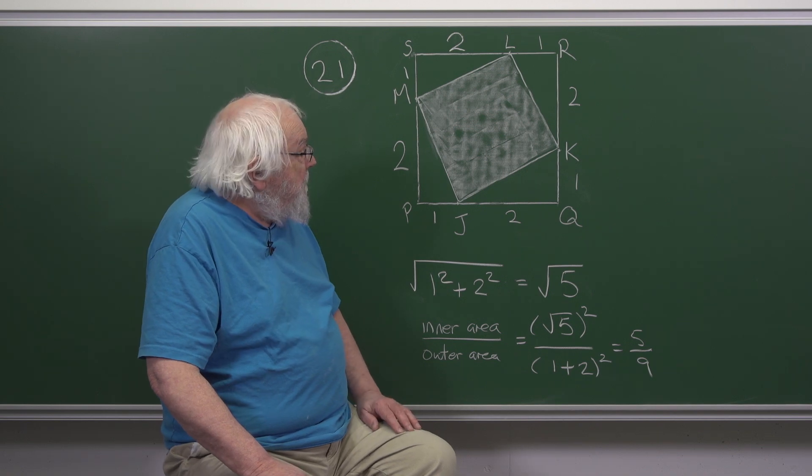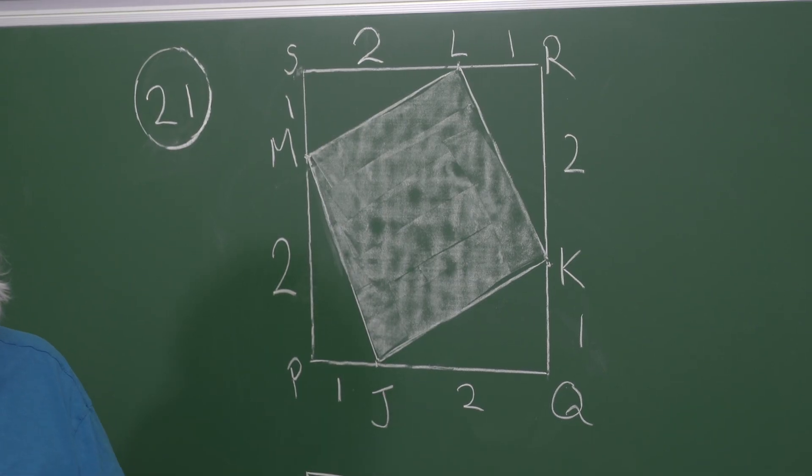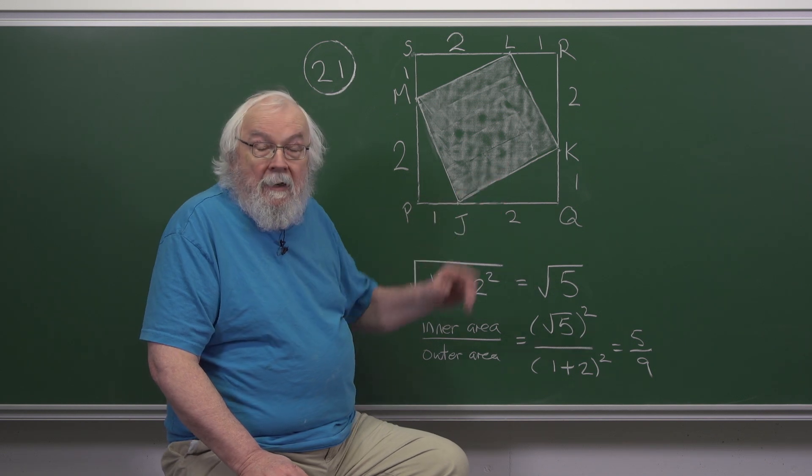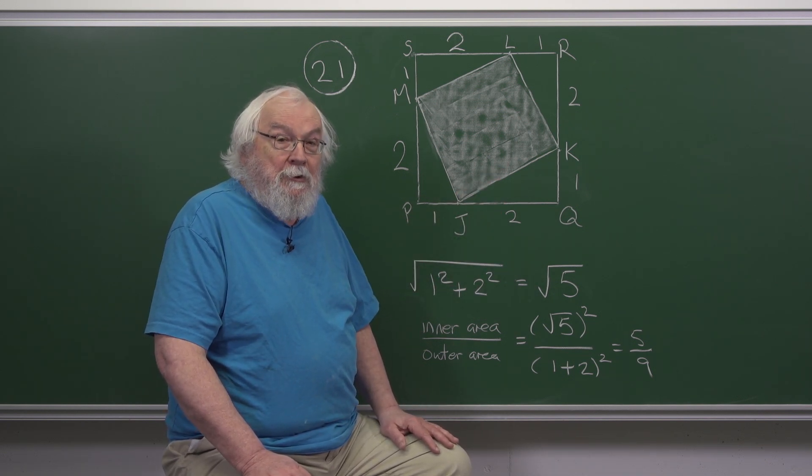So using Pythagoras, these unshaded triangles have right angles in them and the two adjacent sides have length 1 and 2. So the long side, in the jargon the hypotenuse...